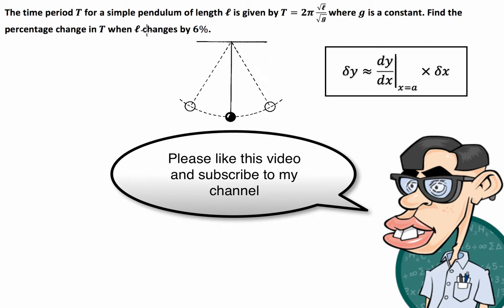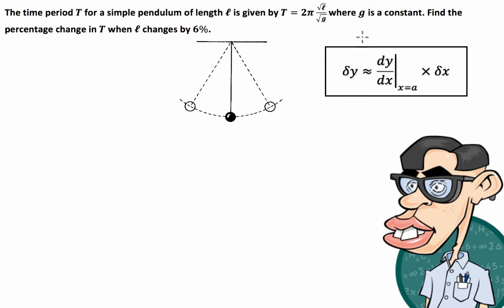The question is asking us that we've got the time period T for a simple pendulum of length l is given by this particular formula where g is a constant. Just a little bonus fact, this g here they're referring to as gravity which is 9.8 ish meters per second squared on earth.